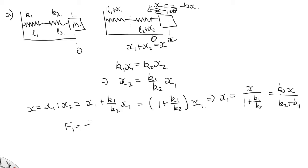will equal minus k1 times the extension of this first spring, x1. So this will be equal to minus k1 times x1, which is k2 x over k2 plus k1. And so the force will be minus k1 k2 over k1 plus k2 x.